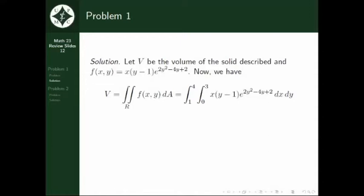Now we have: volume equals the double integral of x multiplied by (y minus 1) times e raised to (2y squared minus 4y plus 2) dx dy. It doesn't matter whether we integrate with respect to x first or with respect to y first — we can use either order. However, it will change how we arrange our limits of integration. In this case, integrating with respect to x first is easier.